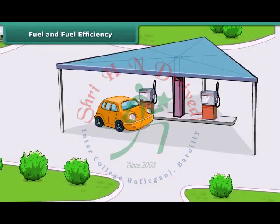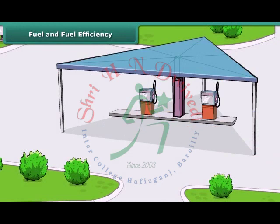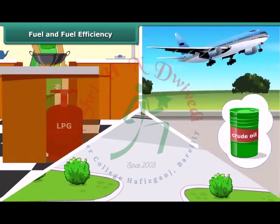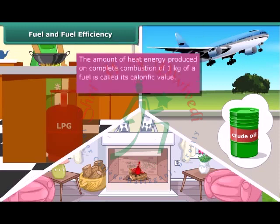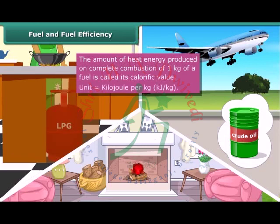Fuels are an important source of energy. We use petrol or diesel for driving a car, LPG for cooking food, crude oil for flying an airplane, and wood to provide warmth. All these are fuels. Fuel efficiency is determined by its calorific value. The amount of heat energy produced on complete combustion of one kilogram of a fuel is called its calorific value, and it is expressed in kilojoules per kg.